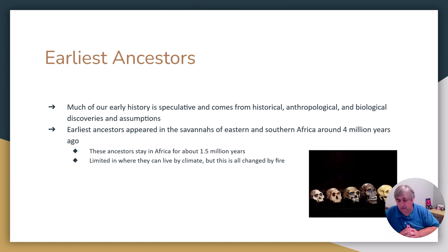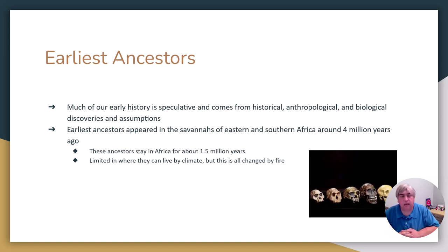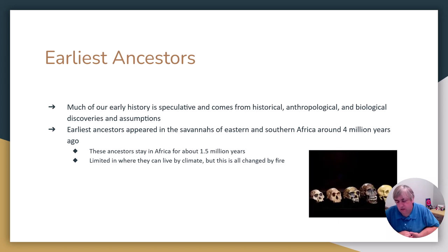Much of our early history is speculative and it comes from a combination of different sources. We've got historical sources, anthropological sources — which is the study of humans and culture — and biological discoveries and studies. What I'm looking at here is just the conglomerate, the standardized academic view. Our earliest ancestors are going to appear in the savannahs and grasslands of eastern and southern Africa somewhere around four million years ago.